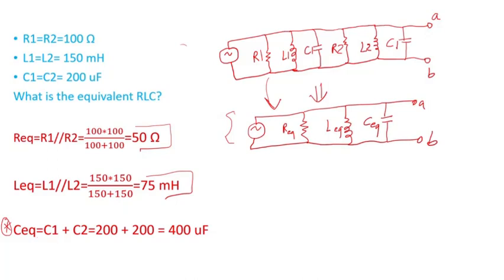So C1 plus C2 equals 400 microfarads. The equivalent resistance here is 50 ohms, the equivalent inductance is 75 millihenry, and the equivalent capacitance is 400 microfarads.